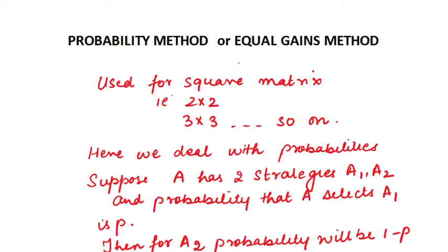Hello everyone, welcome back to my channel. In this video we will be proceeding ahead with another method: the probability method, also called the equal gain method, from game theory. In our previous videos we have done how to develop payoff matrix and two methods for mixed strategies: the odds method and dominance method. Prior to that we also done the saddle point method using maximin and minimax principle.